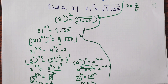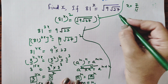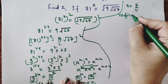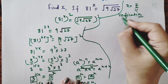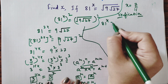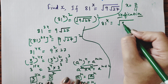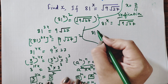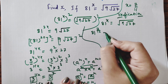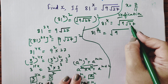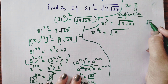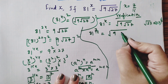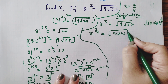Now check whether your answer is correct. So we will do the verification. The left-hand side: 81 power 7 by 16. The right-hand side: root of 9 times root of 27. We can write root of 27 as 27 power 1 by 2.